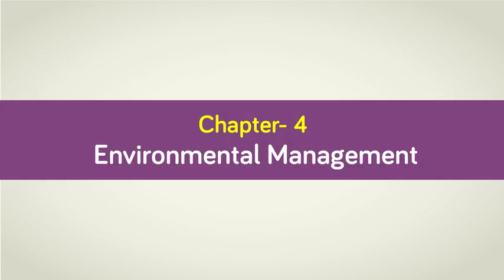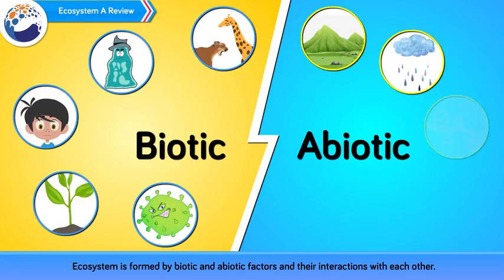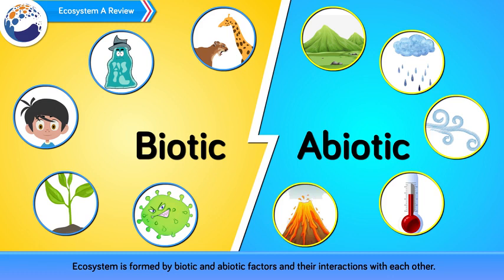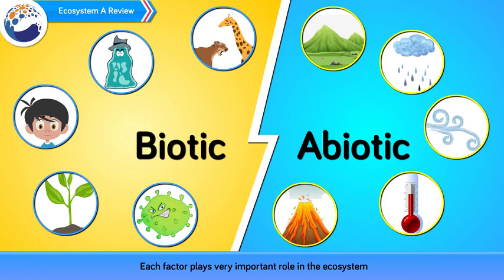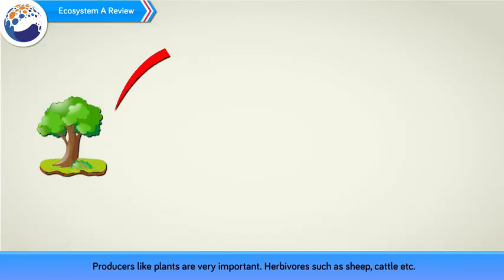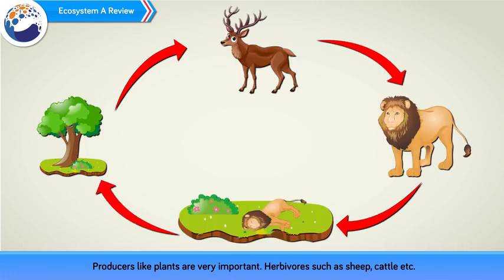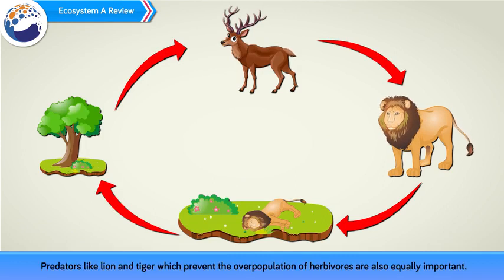Chapter 4: Environmental Management. Ecosystem - a review. An ecosystem is formed by biotic and abiotic factors and their interactions with each other. Each factor plays a very important role in the ecosystem. Producers like plants are very important. Herbivores such as sheep and cattle feeding upon producers are also important. Predators like lion and tiger, which prevent the overpopulation of herbivores, are also equally important.